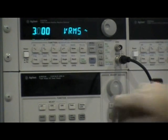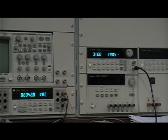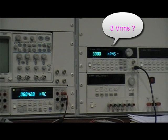Now connect the function generator to the digital multimeter. The digital multimeter reads 6 volts RMS. Which one is the correct value?